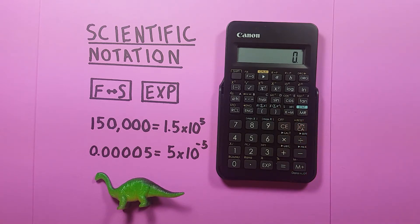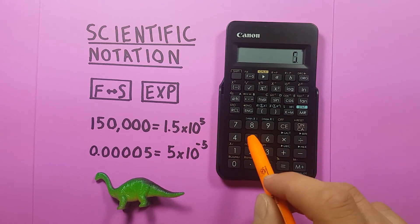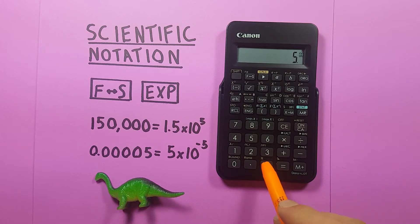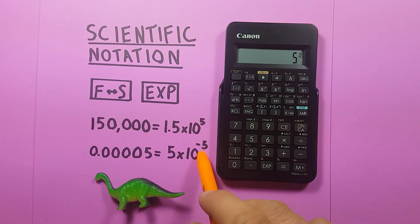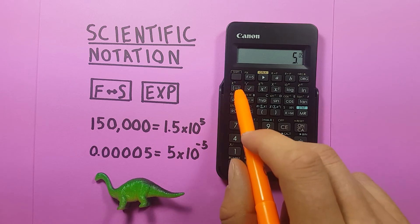Again, this also works with small numbers. So if we had 5 times 10 to the power of negative 5, we would enter it as 5, EXP, 5, but since this is a negative number, we need to use this negative sign. This converts our positive exponent to a negative.